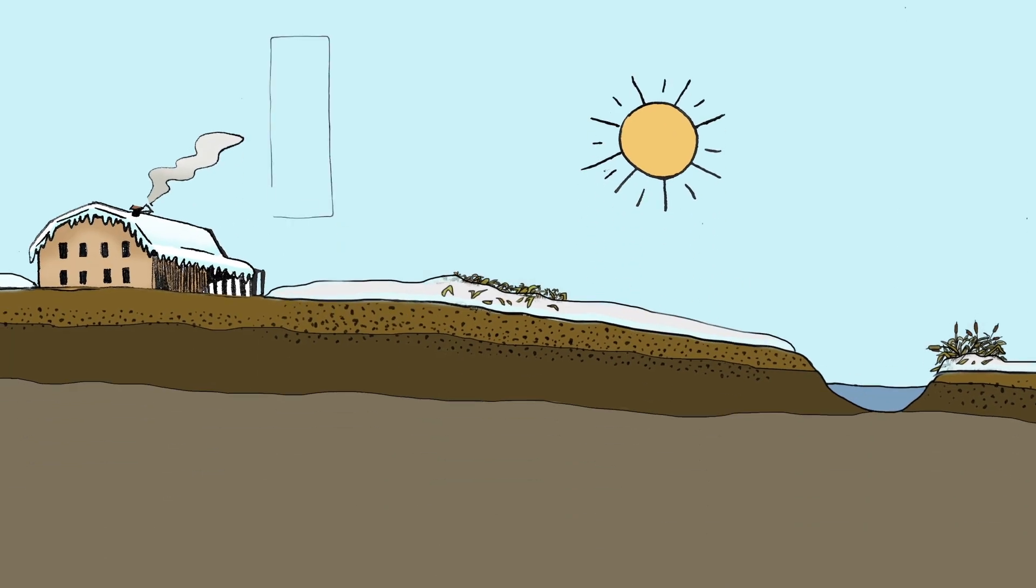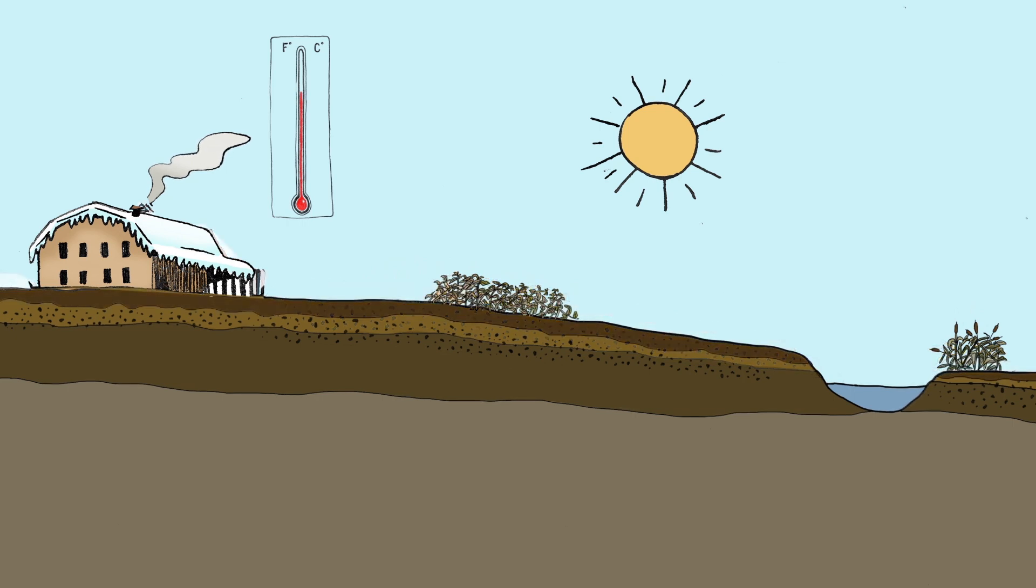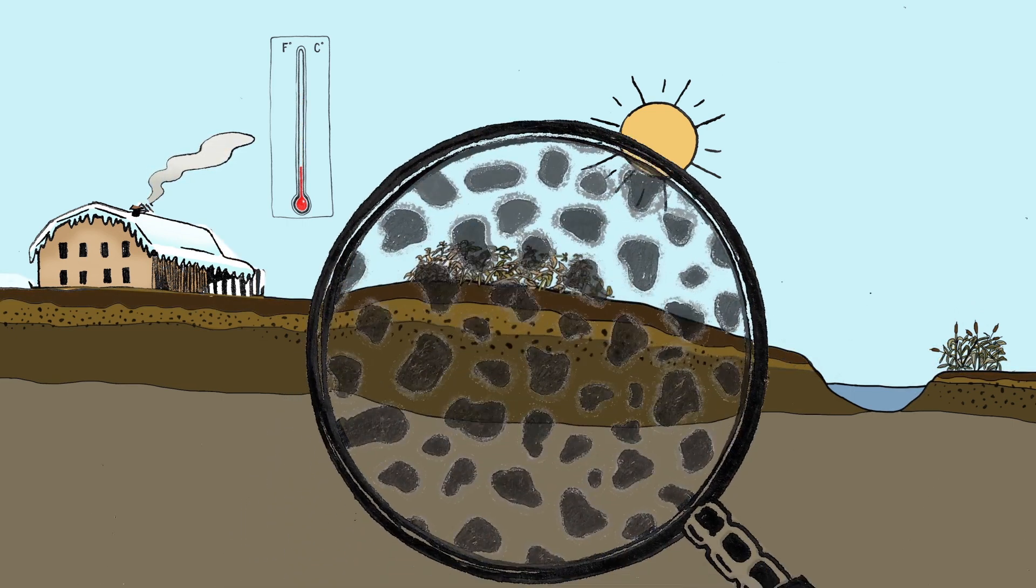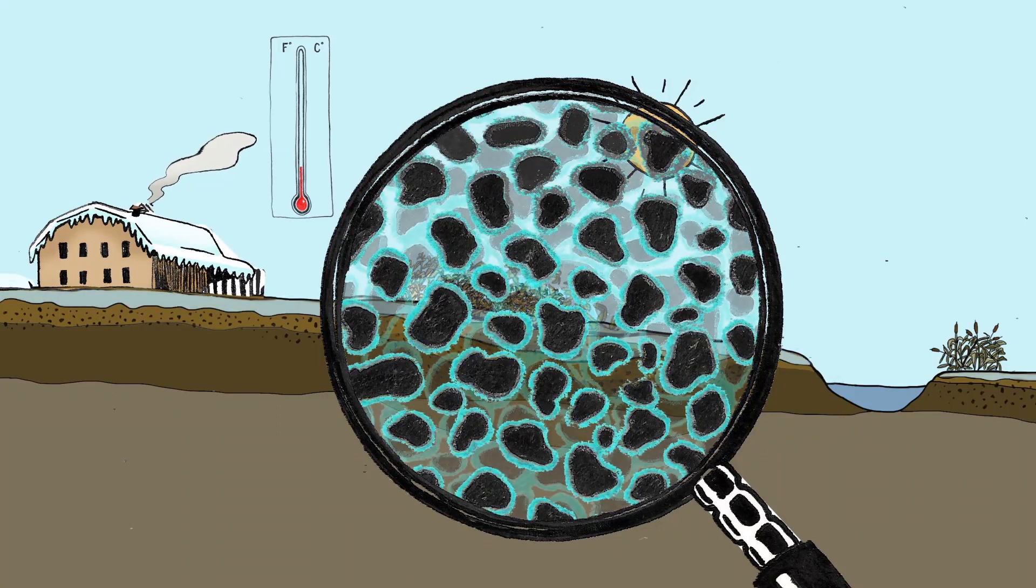Winter manure applications are prone to nutrient losses. After freeze-thaw events all of the air pockets in the soil are full of water and it can refreeze to form an impervious concrete-like layer.